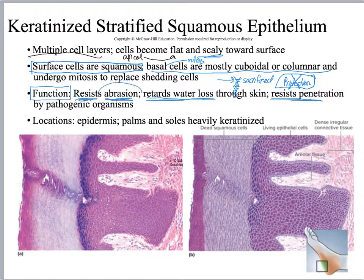Where do you find stratified squamous? Any place where you are dealing with abrasion. If it's keratinized, you're going to find it in the epidermis — the palms and the soles of the feet are especially heavily keratinized. You will also have it in areas that are exposed to dry air, like your lips and other areas like that.